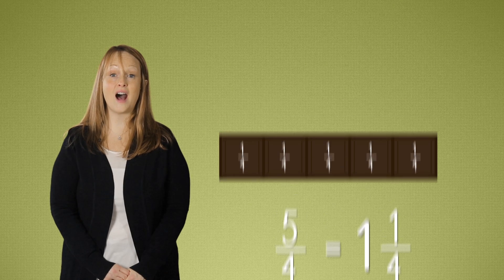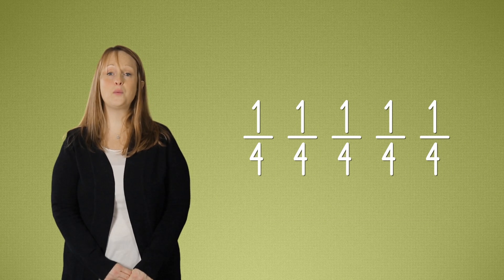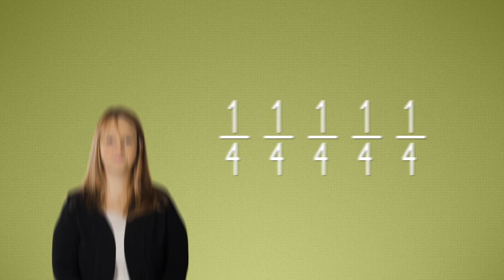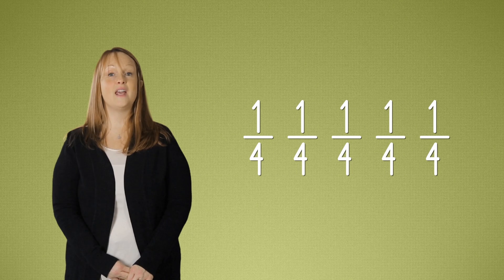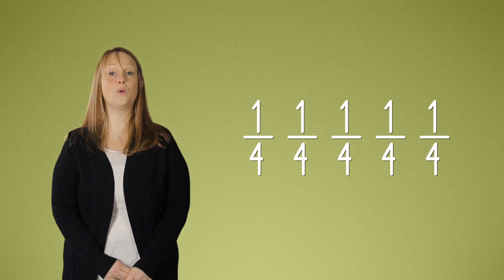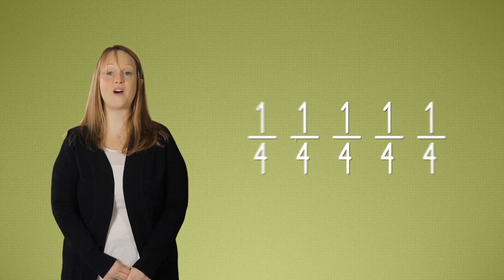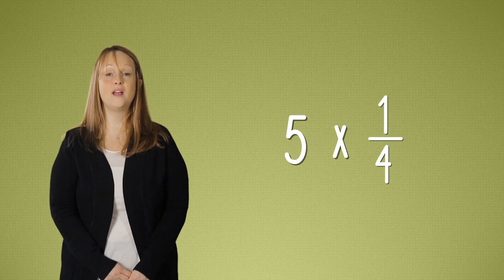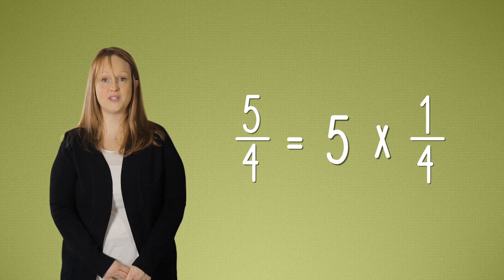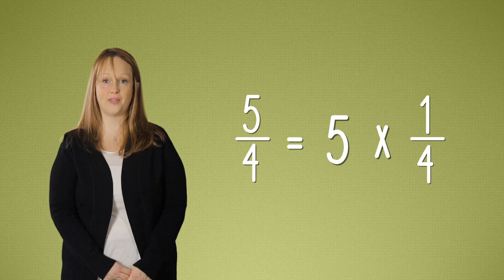If we have five one-fourths, how would we write this using multiplication? If we have five one-fourths, we would write the expression as five times one-fourth. This means that five-fourths is equal to five times one-fourth.